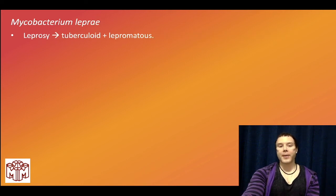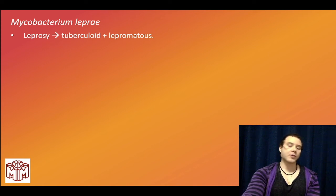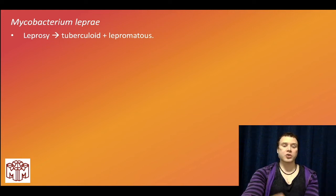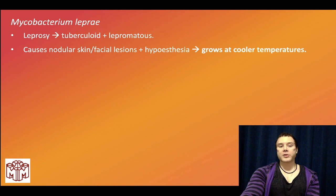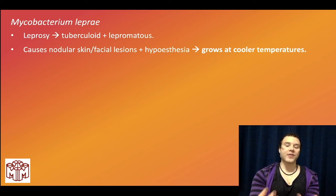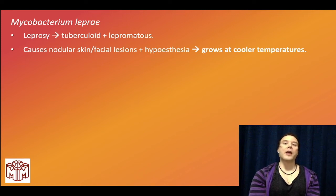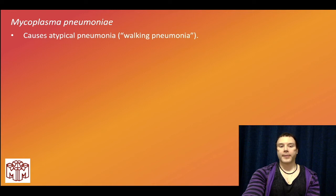Leprosy: Mycobacterium leprae — tuberculoid versus lepromatous. Tuberculoid tends to occur in patients who have a better immune system, more of a Th1 response. Lepromatous tends to occur in those who are more immunocompromised — more of a Th2 response. Leprosy can cause nodular skin lesions, nodular appearance of the hands, and loss of sensation. Super high yield: it grows better at lower temperatures, which is why it likes to affect the tip of the nose and the hands.